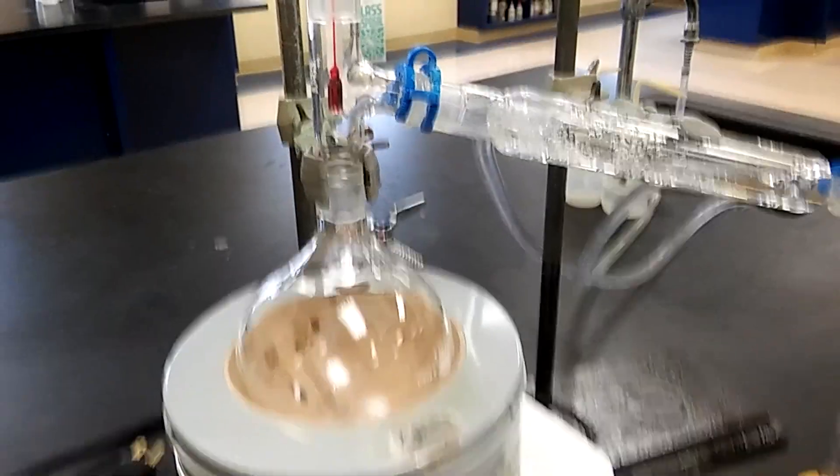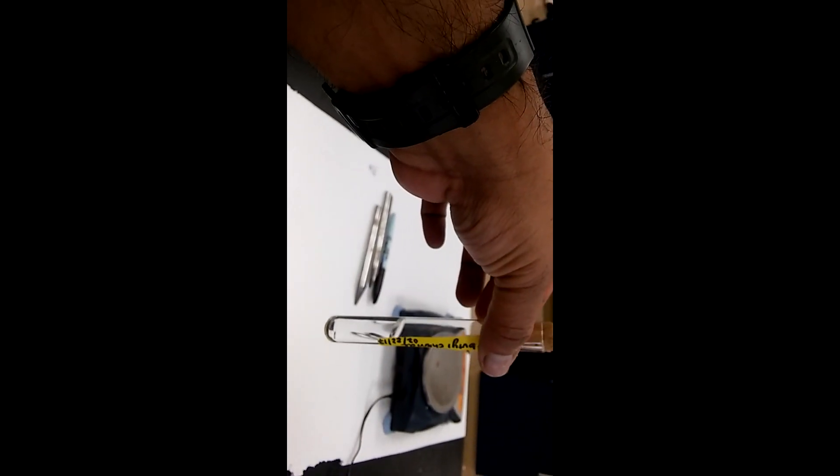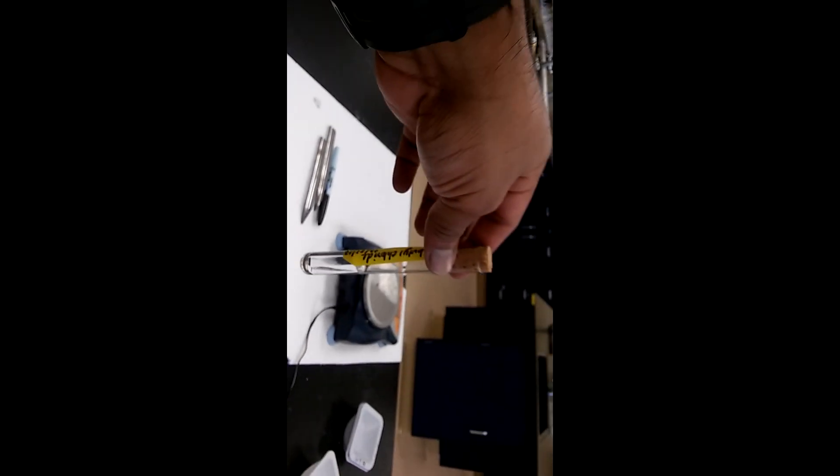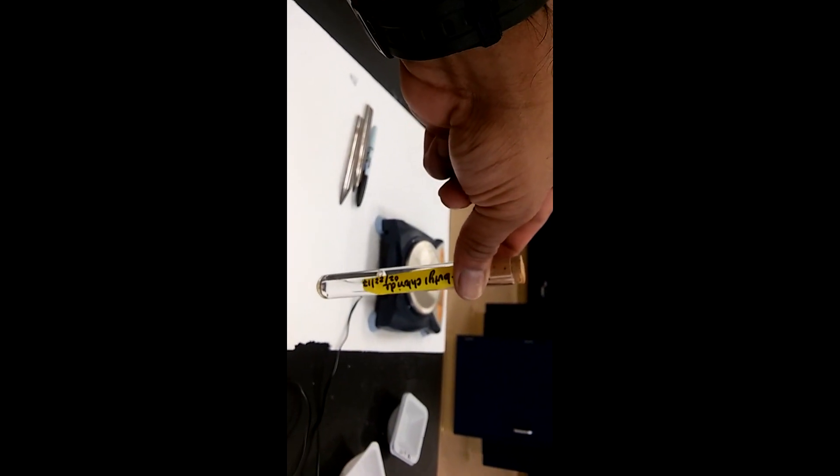Here's the final video in the t-butyl synthesis video series. Here we have our pure t-butyl chloride. If you collect between 49 degrees and 52 degrees, the product you'll have would be your t-butyl chloride. I calculated the percent yield - it came out to be 49%, not bad, not great either.